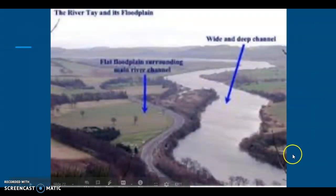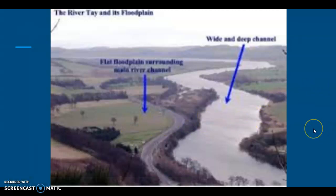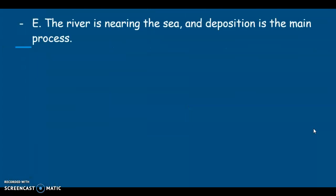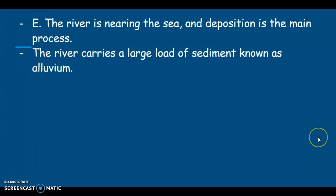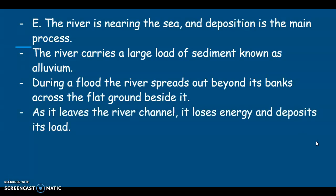Now that we've done our feature and our example, it's time to have a think about our explanation. The river is nearing the sea, and deposition is the main process. The river carries a large load of sediment, known as alluvium. During a flood, the river spreads out beyond its banks, beyond the river channel, and across the flat ground beside it. As it leaves the channel, it loses energy and starts to deposit its load.